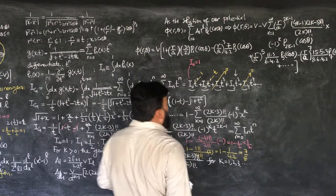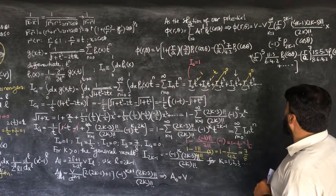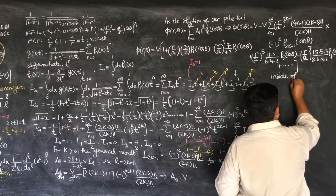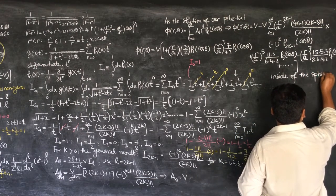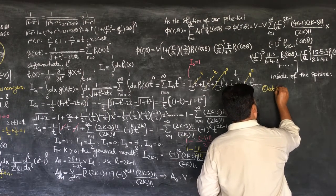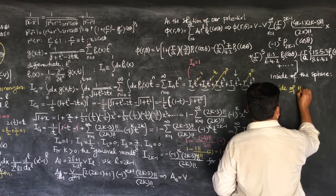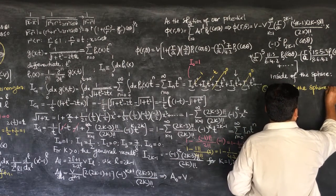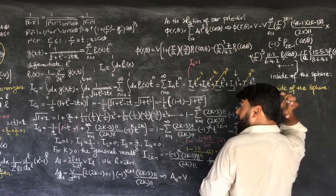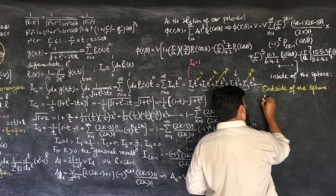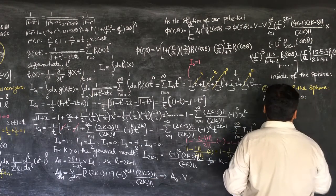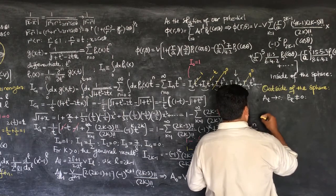So we got our solution here. This is our solution of φ(r,θ) for a hemisphere with two different potentials, and this is for the inside of the sphere. Now if we would like to find the solution for the outside of the sphere, we look at our equation: far outside the sphere, A_L will be 0 while B_L will be non-zero.